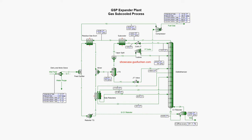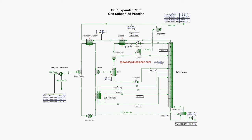Together, the gas is fed into the low-temperature separator (LTS). The liquid is sent to the demethanizer through the JT valve at a temperature of negative 56°F. Part of the gas is expanded in the expander to the demethanizer at a temperature of negative 97°F. The power of the turbine is used to drive the fuel gas compressor.